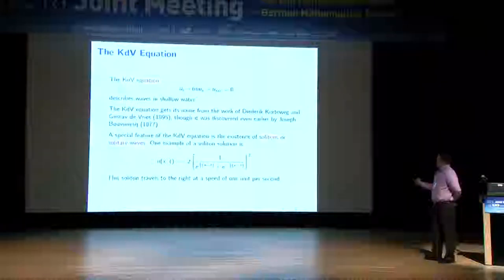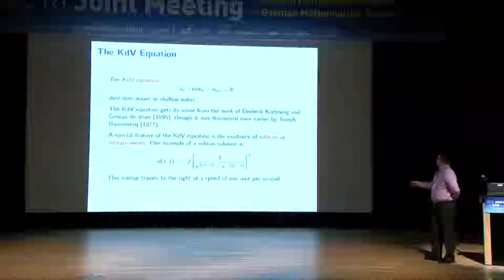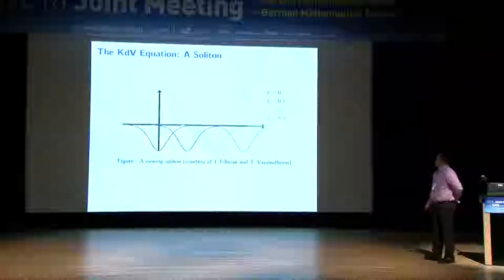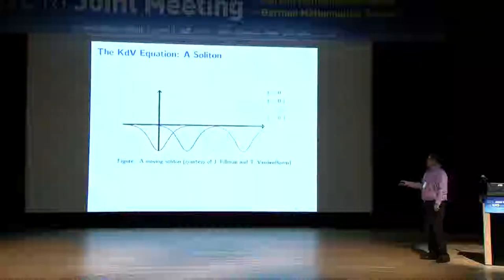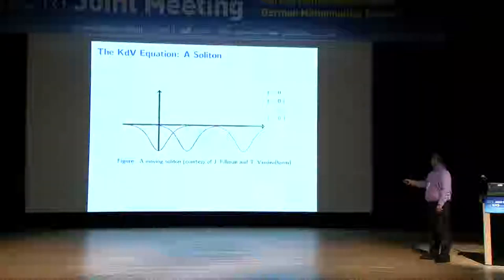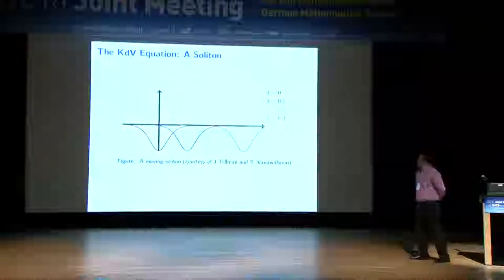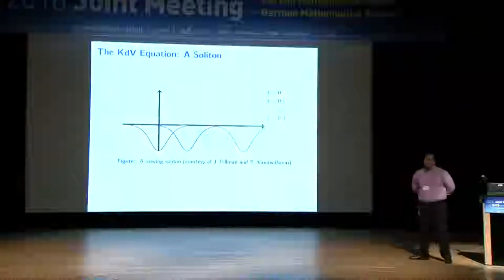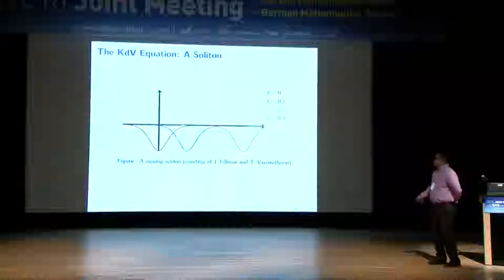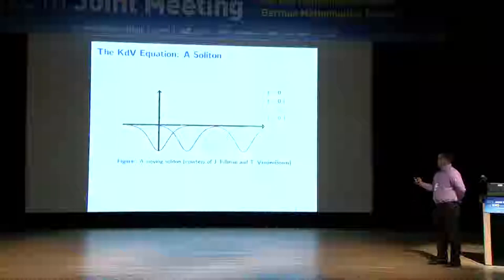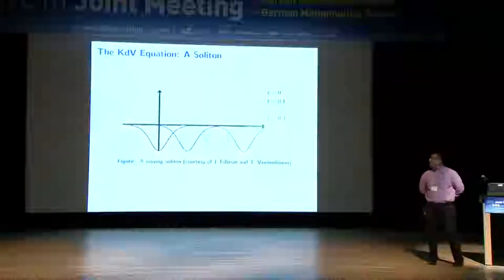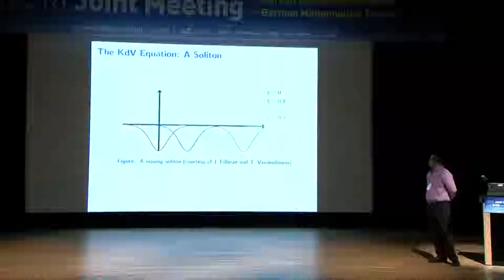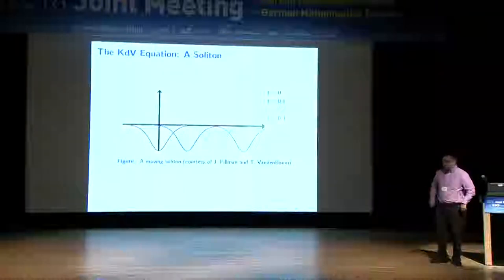The soliton will not change its shape but rather just move, in this case to the right at constant speed. Here's a picture that depicts that behavior — the initial state is the red line, and these are graphs of the solution at later times. This figure is taken from a textbook snapshot being written currently by Jake Fillman and Tom Vandenboom, who allowed me to use the picture.